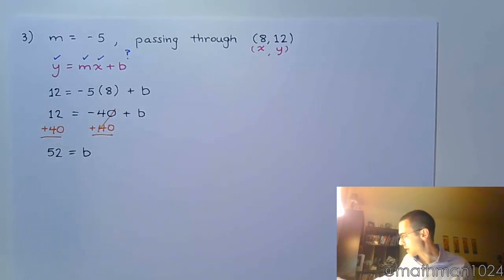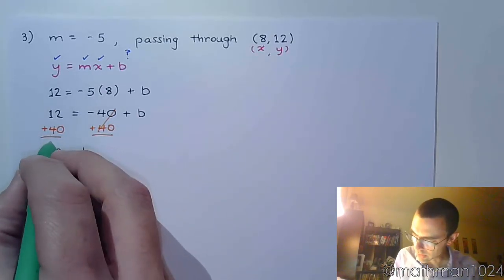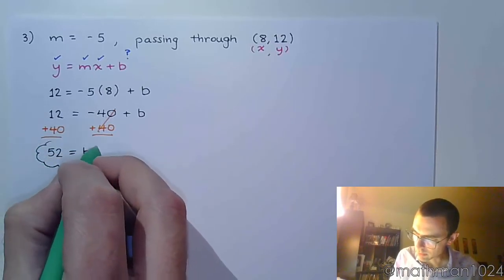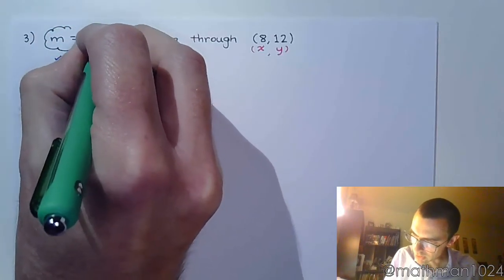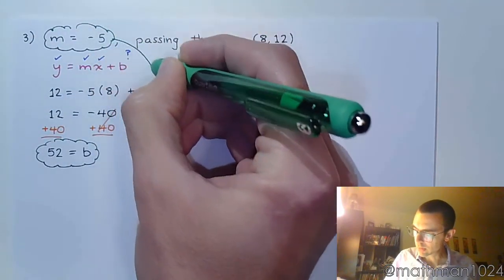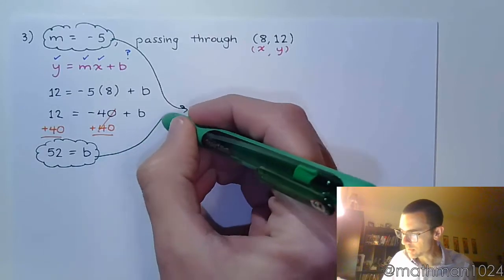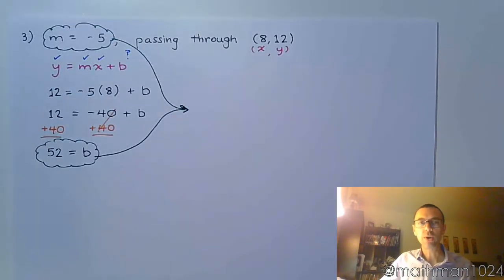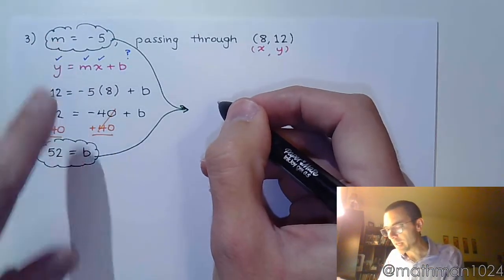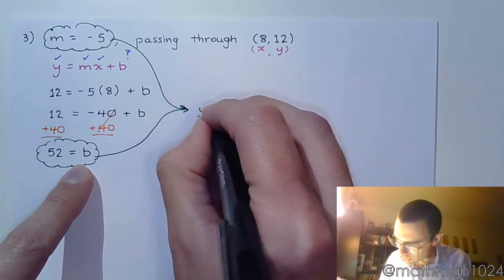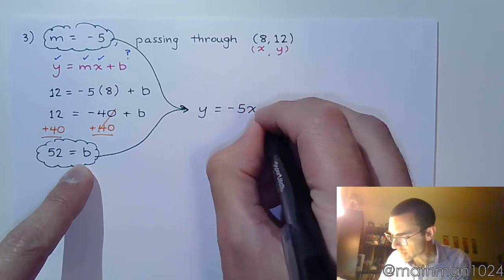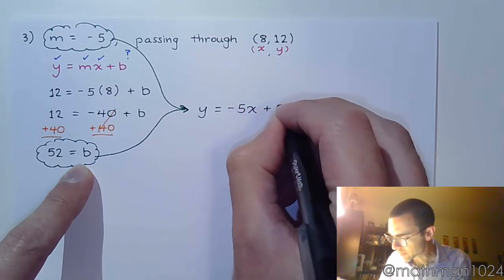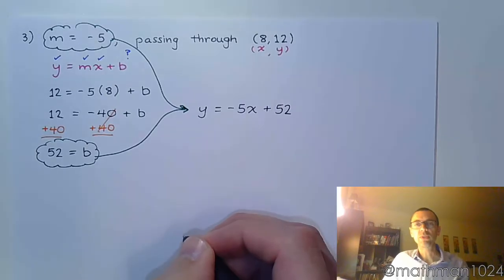Alright, so here's what I have. I have my b value of 52, and I was already given my slope. And now we just need to put these guys together to form our equation. So if that's my m and that's my b, then in slope-intercept form, my equation is y equals negative 5x plus 52. And it's pretty easy to see that this is going to be the correct answer.